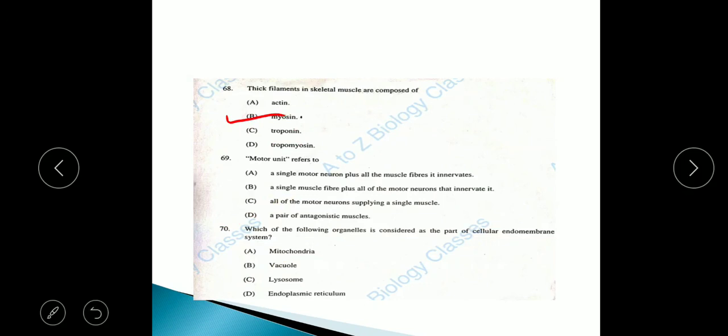Question 69: Motor unit refers to option A, a single motor neuron plus all the muscle fibers it innervates. Question 70: Which of the following organelle is considered as the part of cellular endomembrane system? The answer is ER, endoplasmic reticulum.